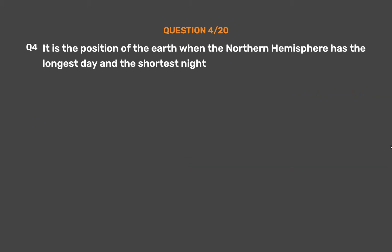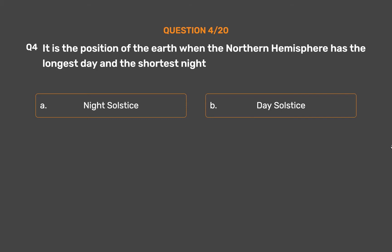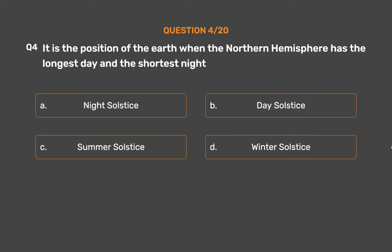Question number 4. It is the position of the Earth when the Northern Hemisphere has the longest day and the shortest night. Option A: Night Solstice. Option B: Day Solstice. Option C: Summer Solstice. Option D: Winter Solstice.